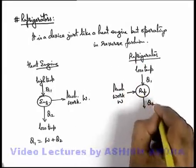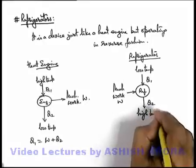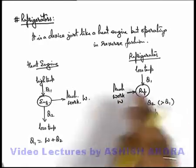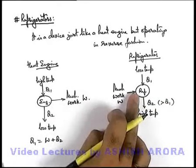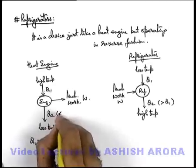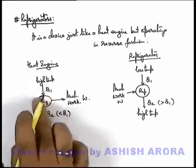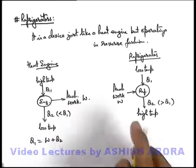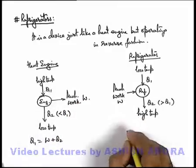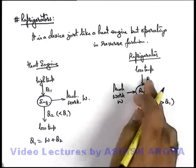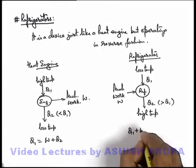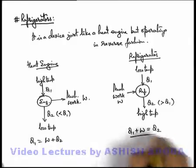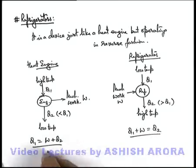And it rejects heat Q2 to a high temperature region. In this situation we can see that Q2 is more than Q1, because an amount of work is also supplied to it. Here Q2 is obviously more than Q1 because work is also added. So by energy conservation, if Q1 is the heat which is extracted and W is the work which is being done, the total amount of heat Q2 rejected is Q2 = Q1 + W. We are writing this equation only in magnitude.